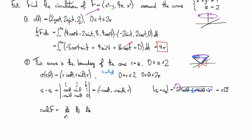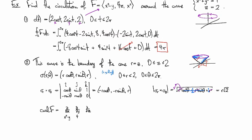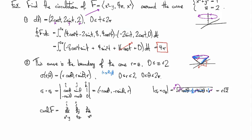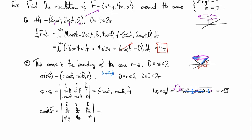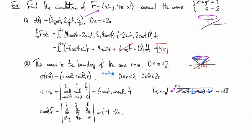and our components of F are x² - y, 4z, and x². And we've got i hat, j hat, k hat. And we compute the partials and work them out. And we get -4 and -2x and 1.